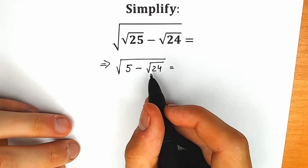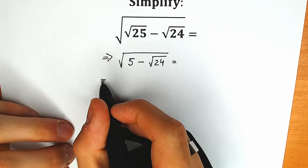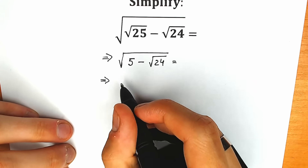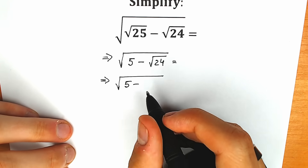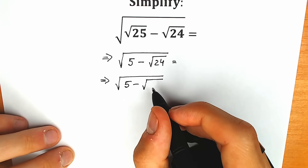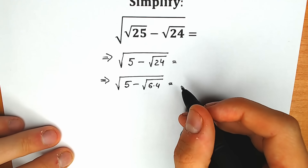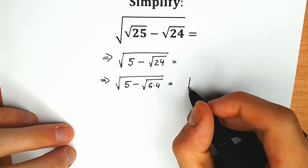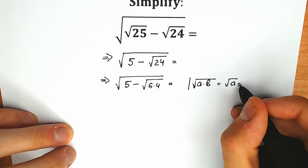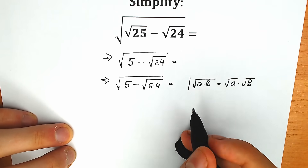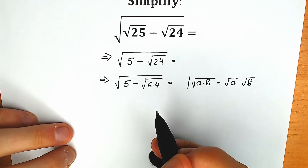What we're going to do next? We can write 24 as 6 times 4, so we can express square root of 24 as square root of 6 times 4. According to the basic square root property, square root of a times b equals square root of a times square root of b. Applying this rule, we can write it as square root of 6 times square root of 4.